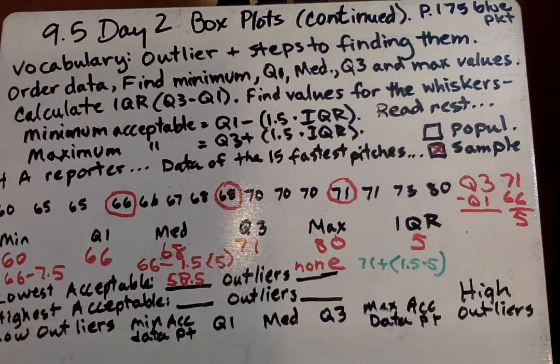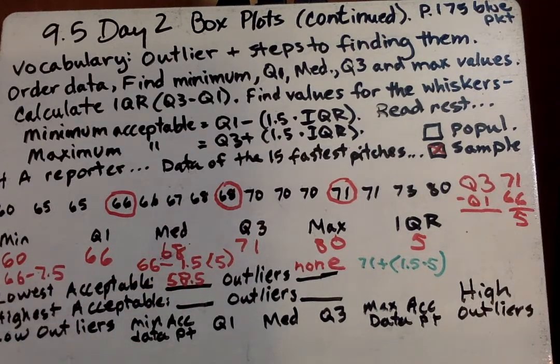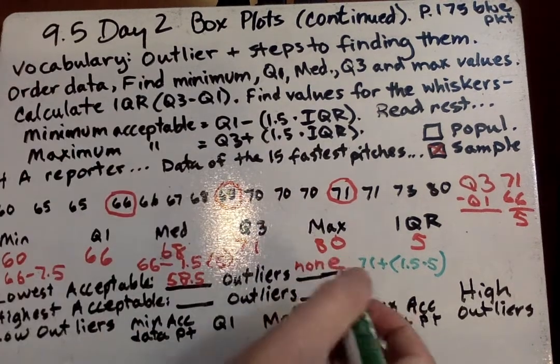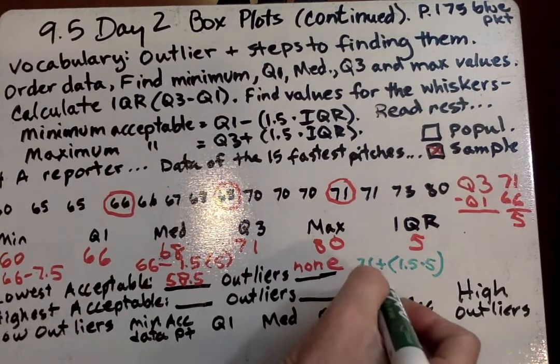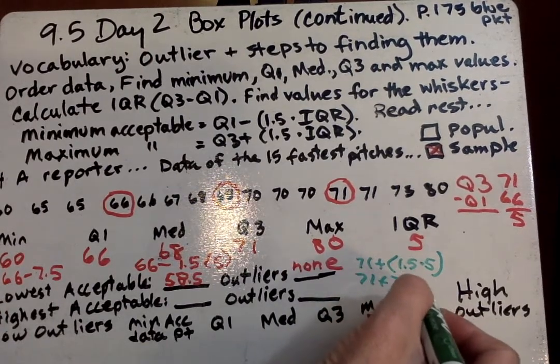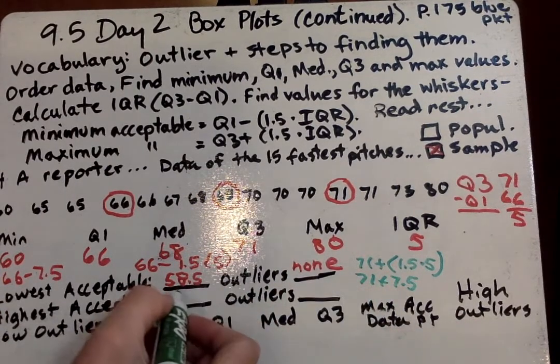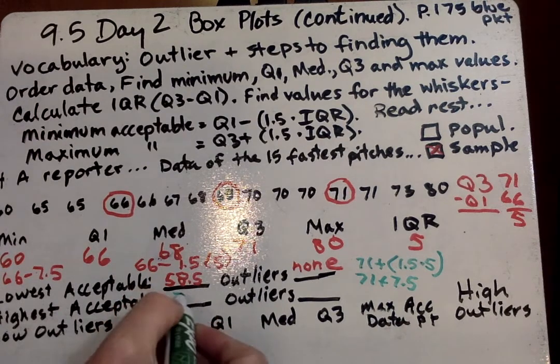So we know from our previous one that that is going to be 7.5. So it's 71 plus 7.5, and if I add those two together, I get 78.5.